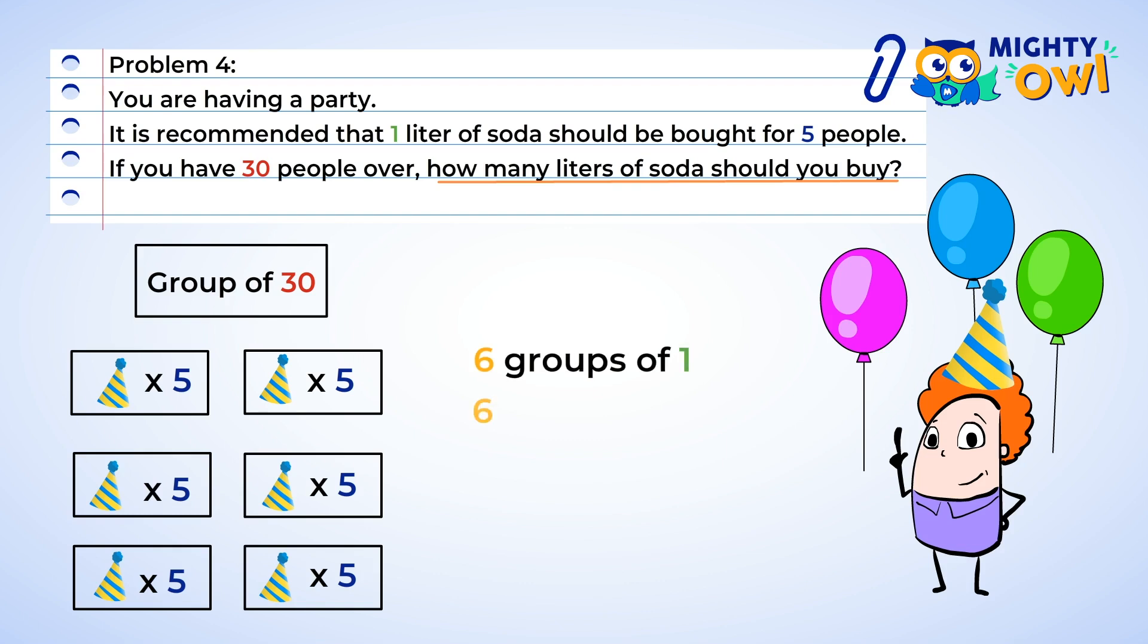If each group of five gets one liter of soda, that means we have the multiplication problem of six groups of one. Well, six multiplied by one is six, and so we're going to have to buy six liters of soda.